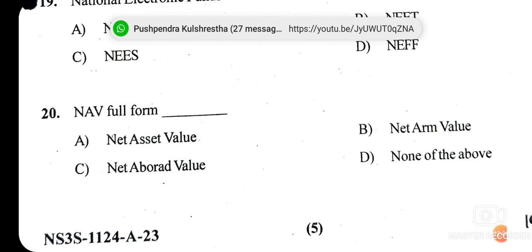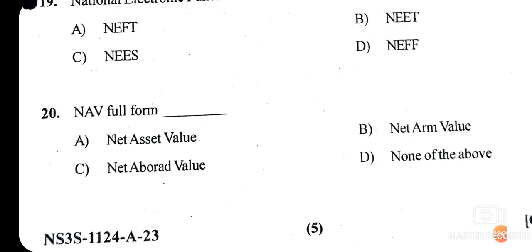Question twenty: NAV full form — is it Net Asset Value, Net Arm Value, Net Abroad Value, or none of the above? The right answer is option A — Net Asset Value. The performance of a mutual fund scheme is denoted by the Net Asset Value per unit; NAV is used for mutual fund schemes.